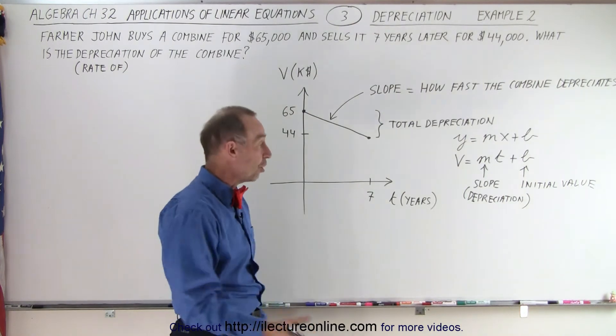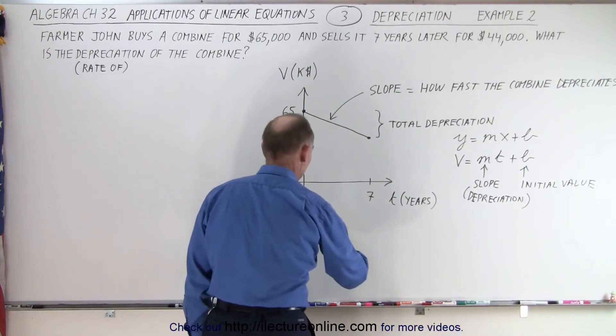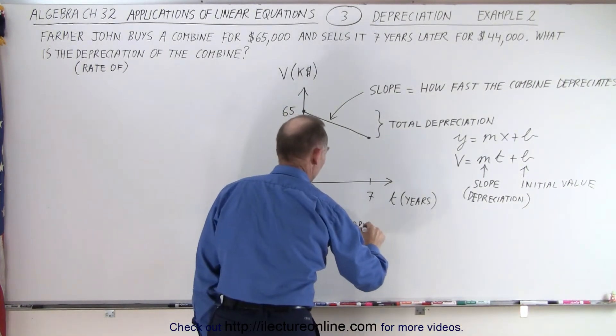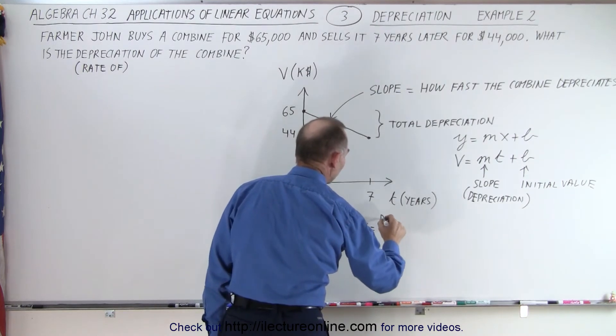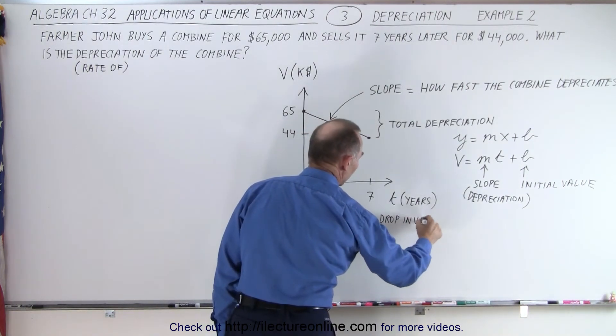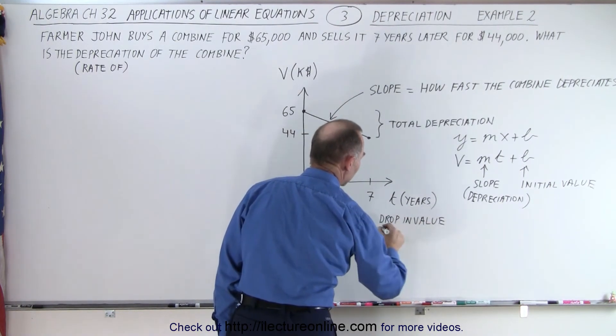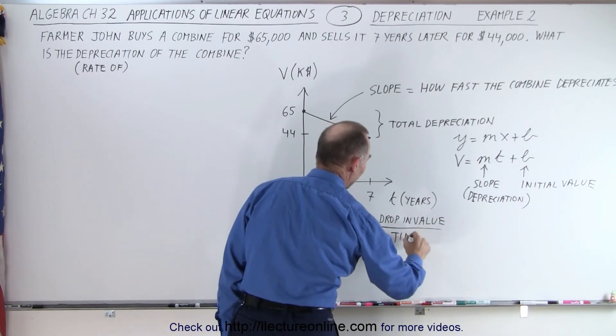So the definition of the slope, which is what we're looking for, m, which is equal to the slope, which is equal to the drop in value, which is going to be a negative quantity divided by the time that has elapsed.